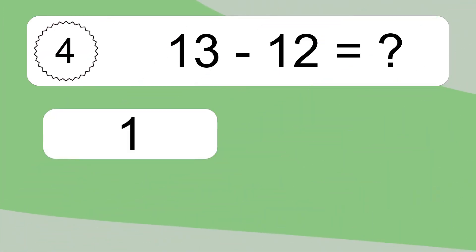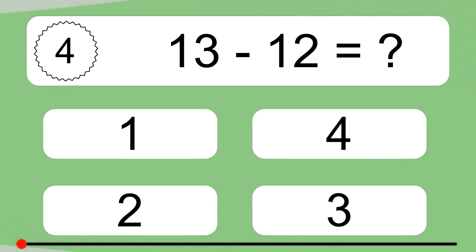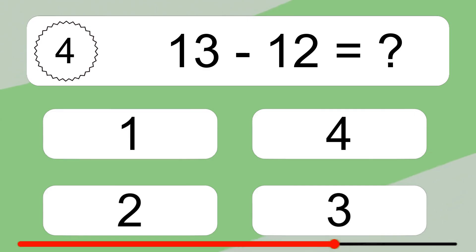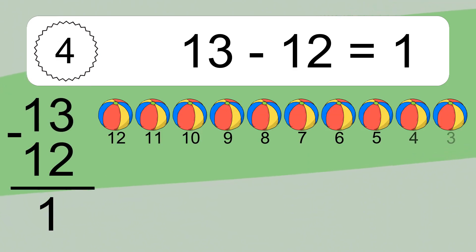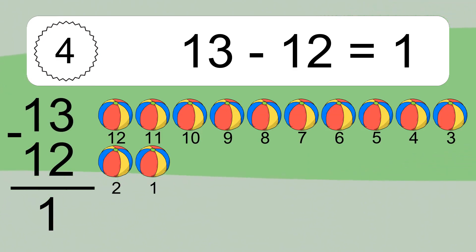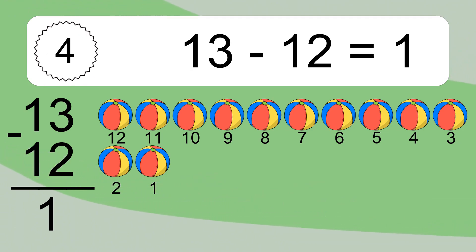13 minus 12 equals what? 13 minus 12 equals 1. Let's count it: 12, 11, 10, 9, 8, 7, 6, 5, 4, 3, 2, 1.